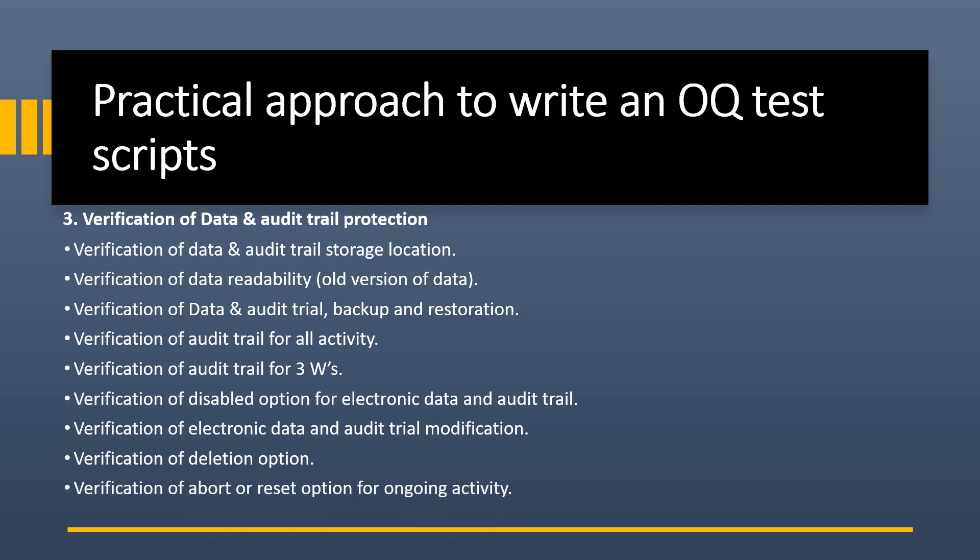Next is verification of abort or reset option for ongoing activity — if a system is running, there should be no option to stop or reset the ongoing activity; if such an event occurs, data and audit trail should still capture all activity. Next is verification of network failure protection mode, applicable for server-based systems — if the network connection is lost, data shall be stored locally and transferred to the server once the network resumes.